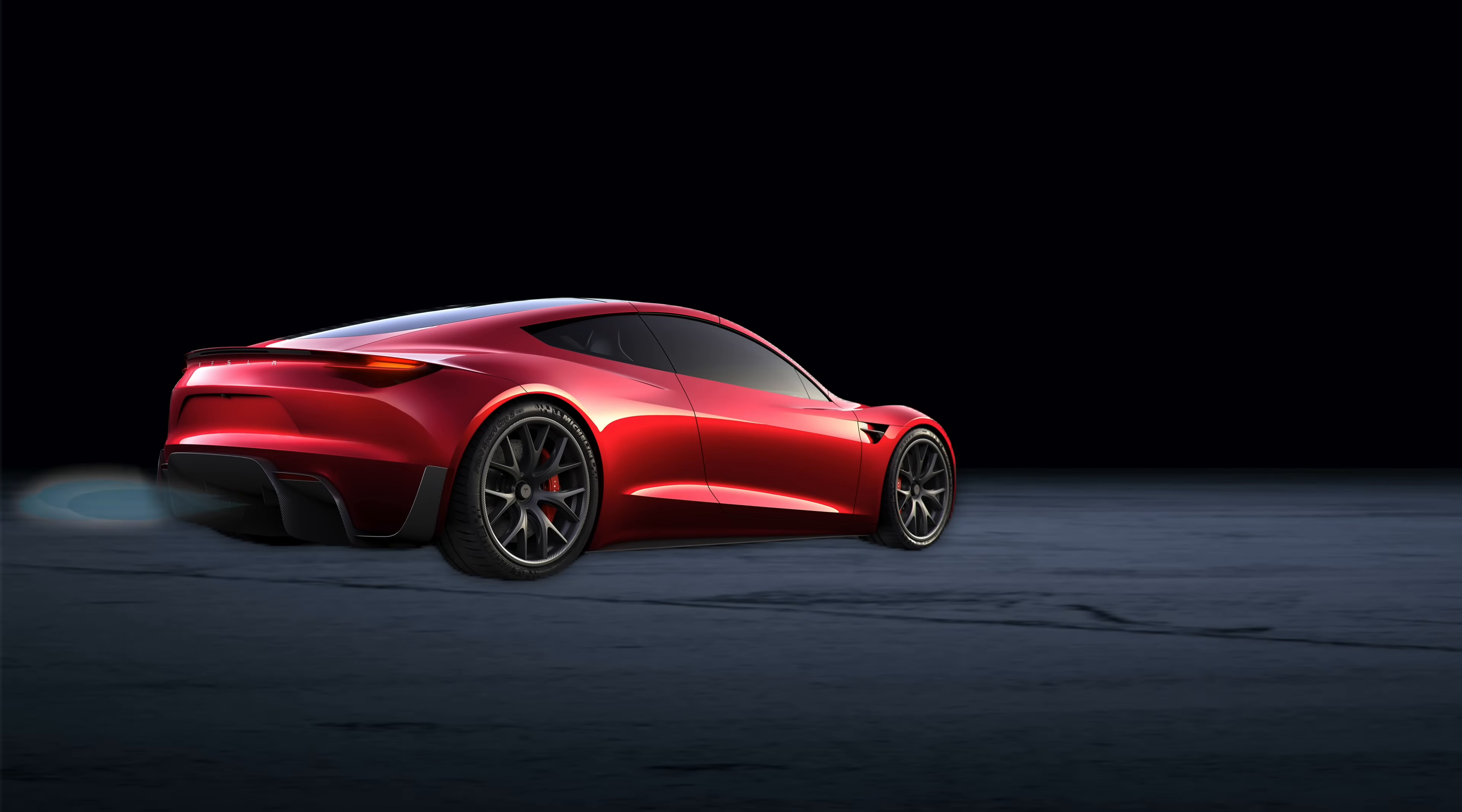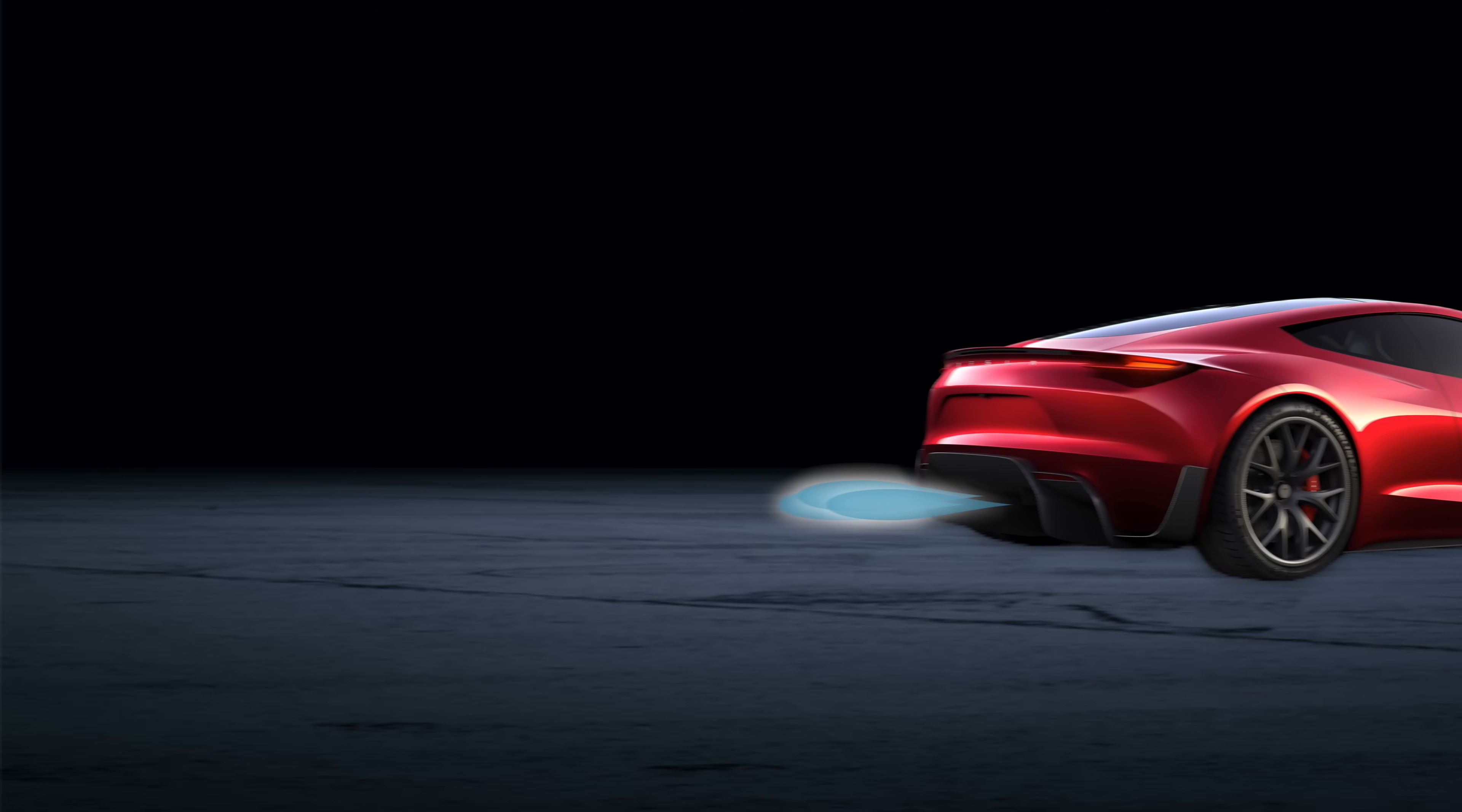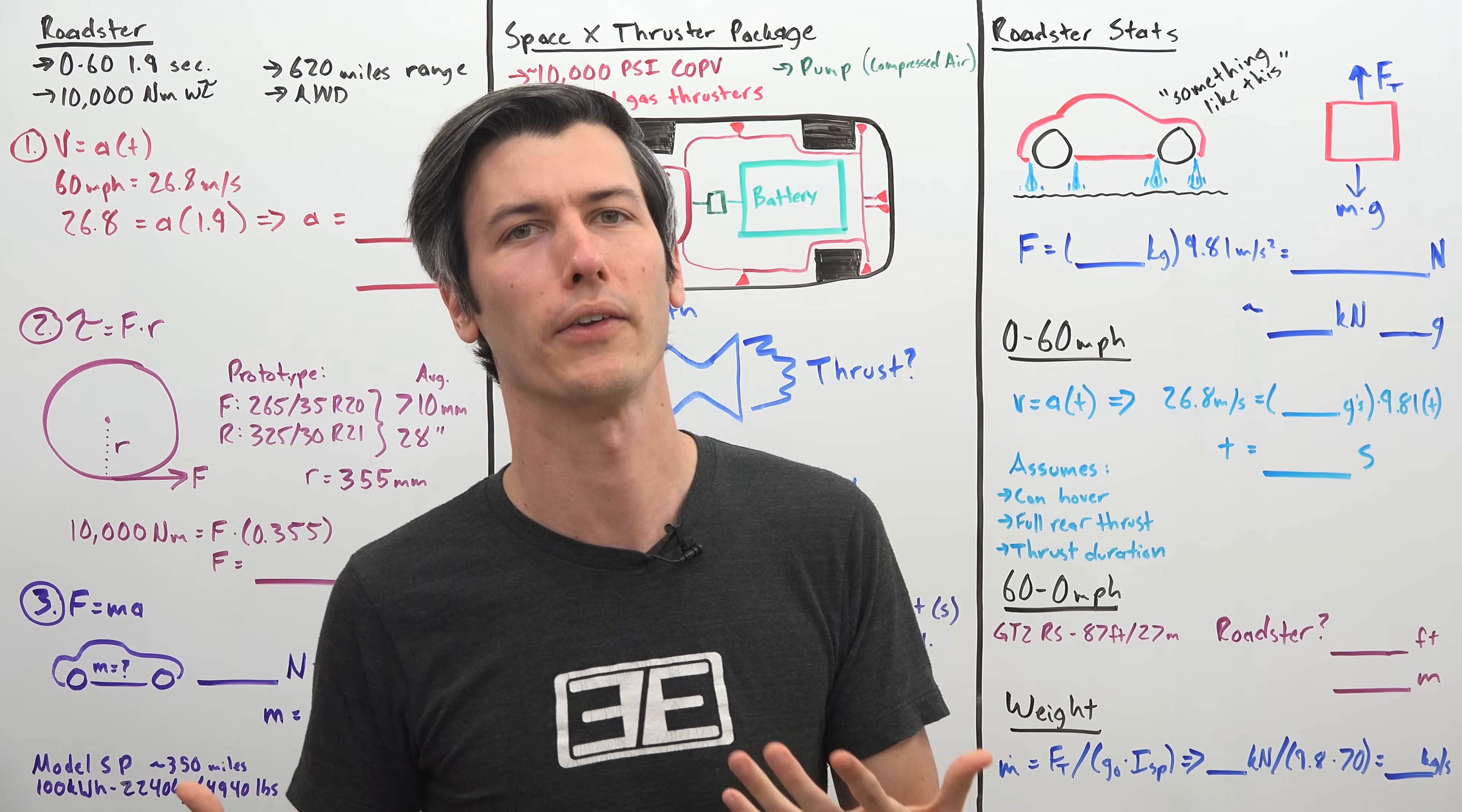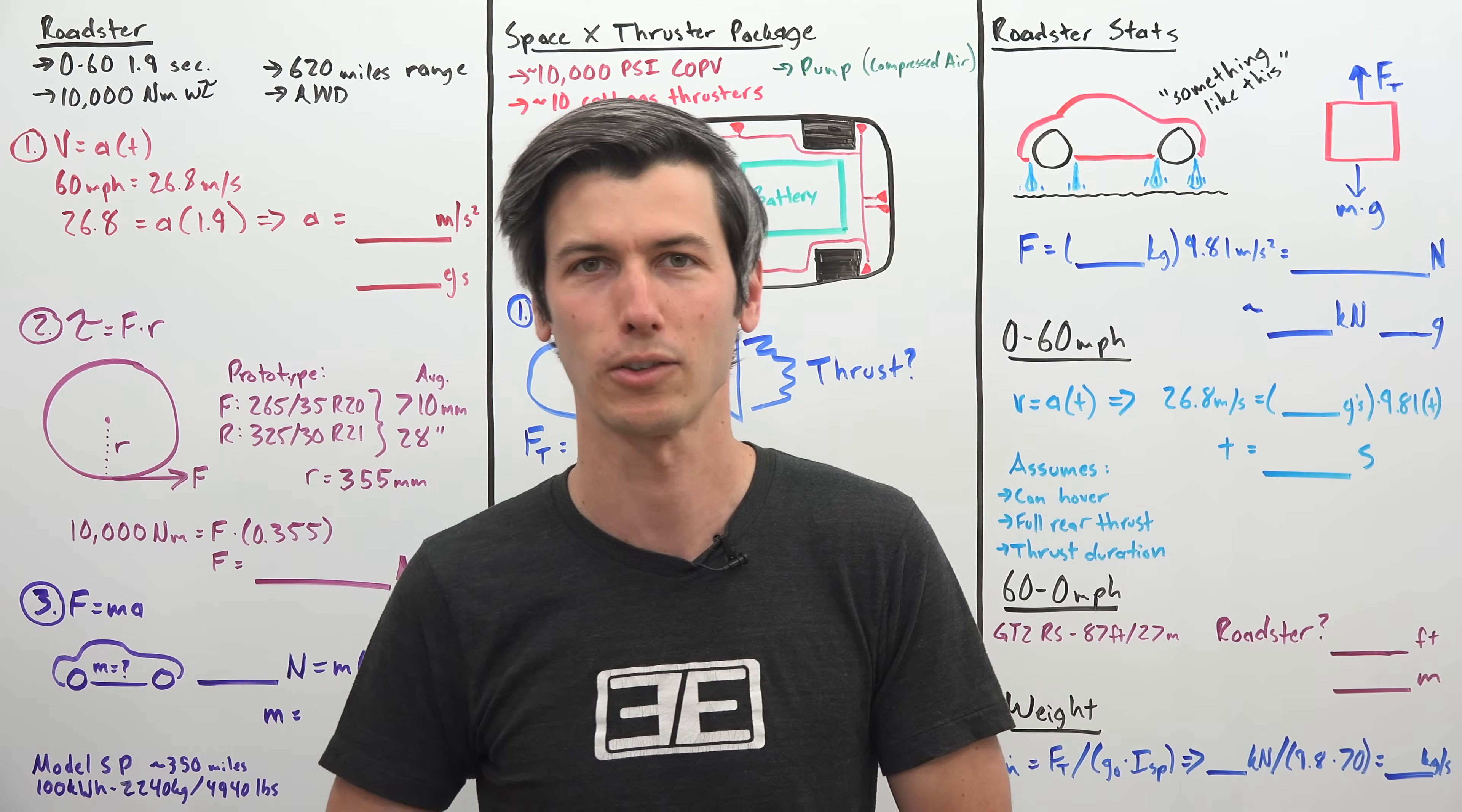Hello everyone and welcome. In this video, we're going to be talking about the new Tesla Roadster and how the cold gas thrusters which are going to be on this Roadster, essentially rockets, how these rockets work. And by analyzing these rockets and figuring out how they work, we can determine the performance characteristics of the Tesla Roadster.